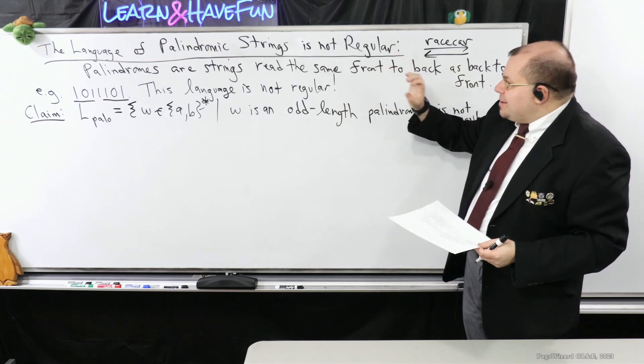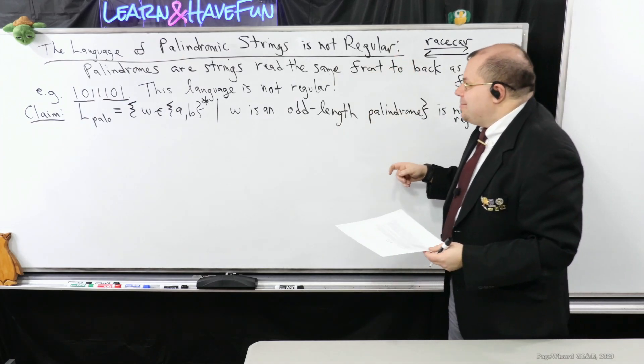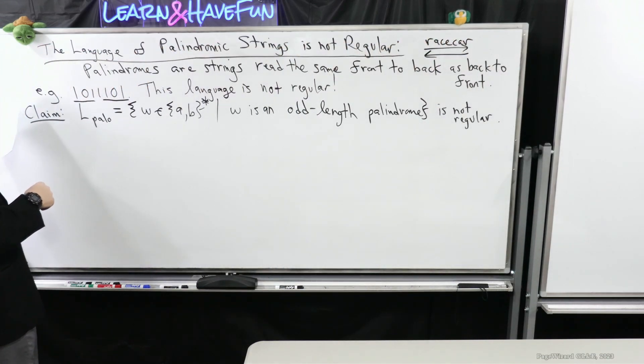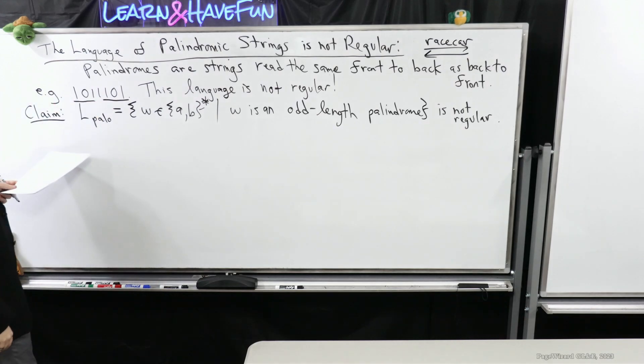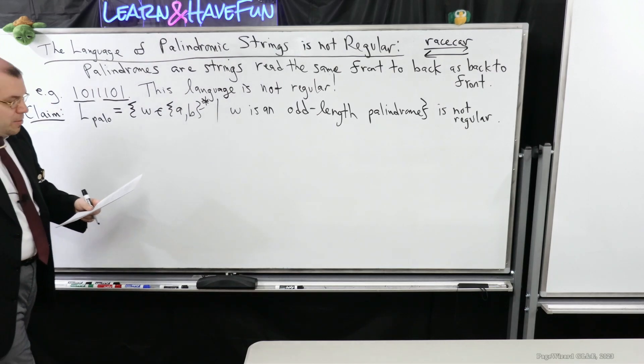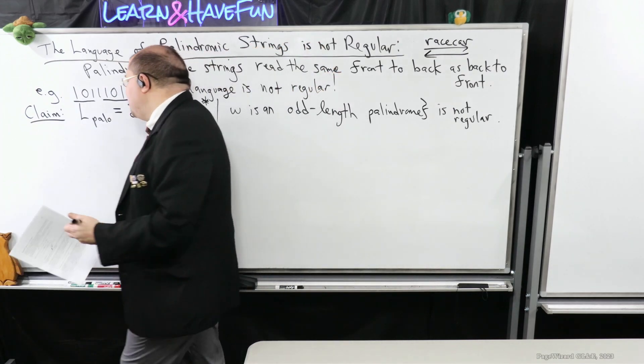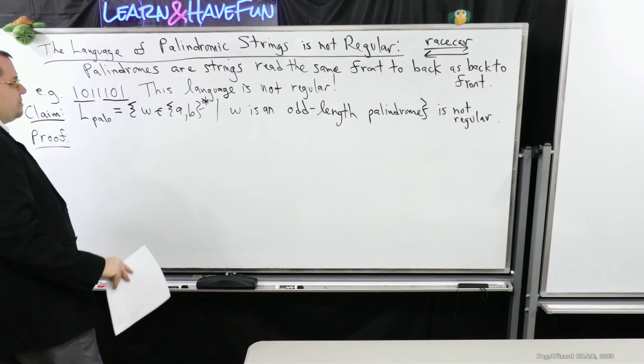So this language isn't regular. So we're going to consider L_palo, which is going to simply be all strings consisting of A's and B's, where W is an odd length palindrome. We're going to show that this isn't regular. L_palo isn't regular. So what's the first thing that we do when we want to try using the pumping lemma in a contradiction proof?